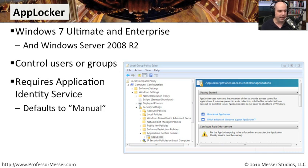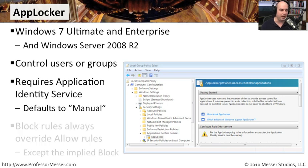AppLocker also requires that a particular service be running on the workstation. The name of the service is the Application Identity Service. By default, this service defaults to manual, which means it's not going to run. We can configure AppLocker configurations all day long, but none of them will take effect until we turn that particular service on. Because it's set to manual, we could start it manually ourselves to test out our AppLocker. If it works, we can then set it to be automatic. If it doesn't, we can simply reboot and we're back to manual.